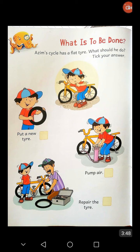As his bicycle tire has punctured and become a flat tire, what should he do? The first option is put a new tire. Second is pump air. Third one is repair the cycle. You tick your answer that is appropriate according to you. Tick the correct one.